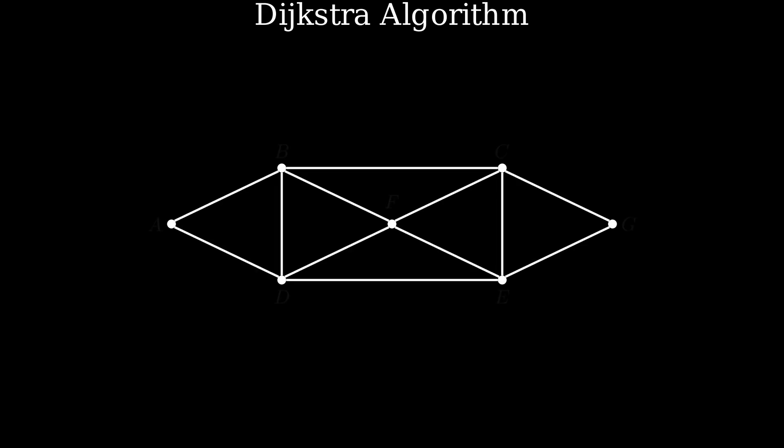Finally, the Dijkstra algorithm. The easiest way to understand this is through an example. We need a graph, and let's name every vertex. Here, every edge has a value too. This value most likely represents the time it takes to go from one point to the other. For example, here, going from point A to point B takes 12 minutes, or maybe 12 seconds.